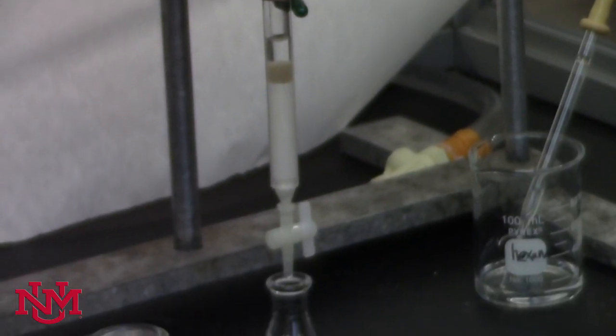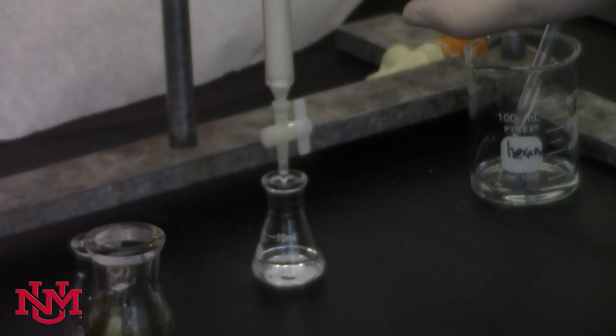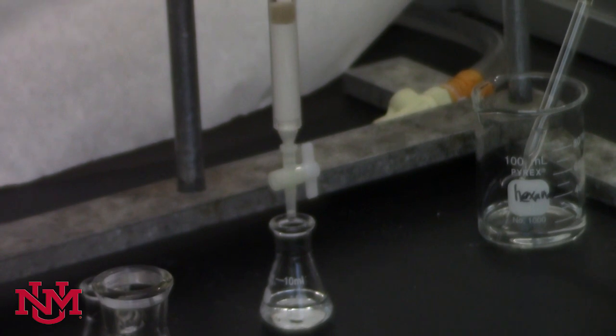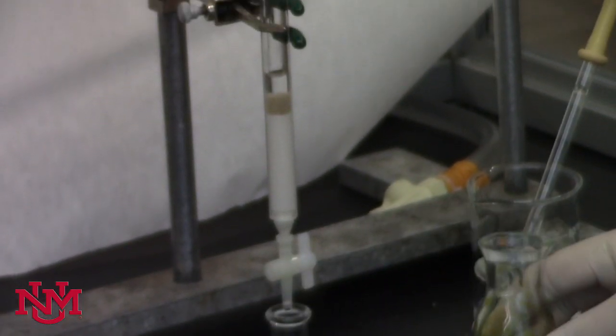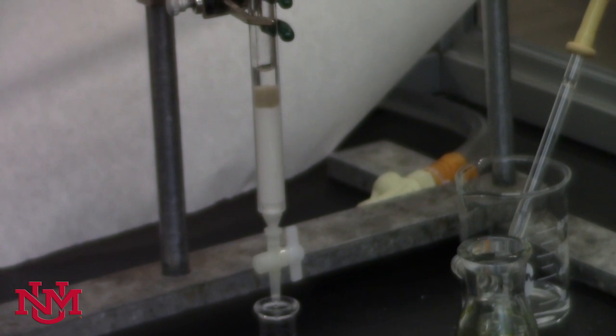At this point, we want to drain the hexane all the way to the level of the top of the sand. When we get to that point, that's when we can apply our sample or our green spinach extract onto the column and begin to separate the pigments.